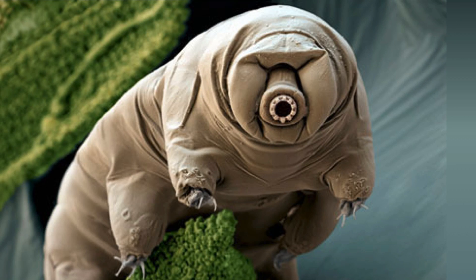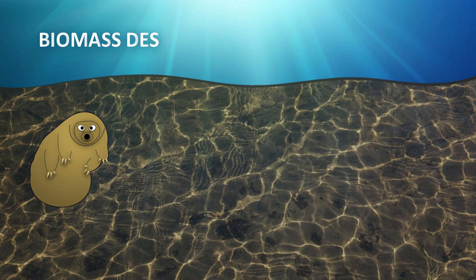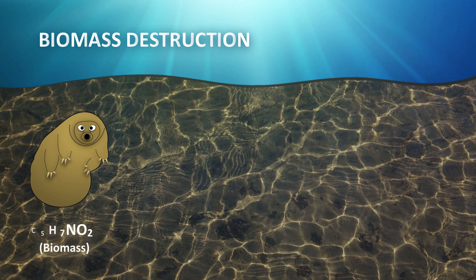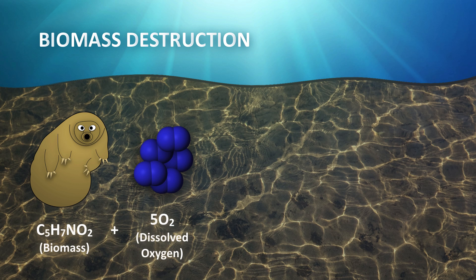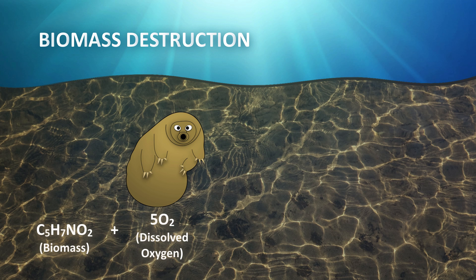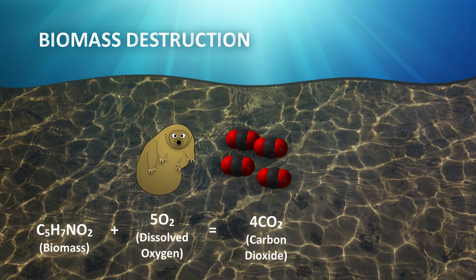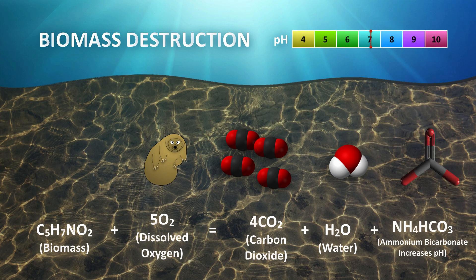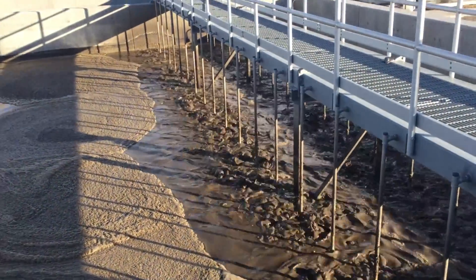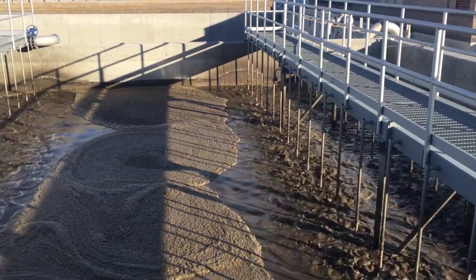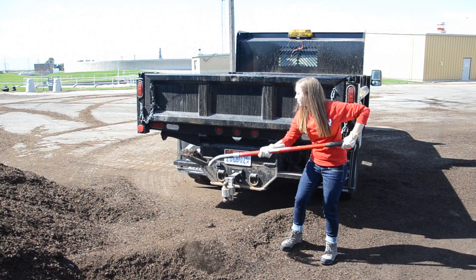The first biological process in an aerobic digestion system is biomass destruction. In biomass destruction, the food supply is depleted, so microorganisms consume their own protoplasm to obtain energy for cell maintenance reactions. The biomass requires 5 moles of oxygen to oxidize its own protoplasm, which is reduced to carbon dioxide, water, and ammonium bicarbonate. This describes how volatile solids reduction occurs. Essentially, under these conditions, the bugs will eat themselves, which means you need to haul less of them off.